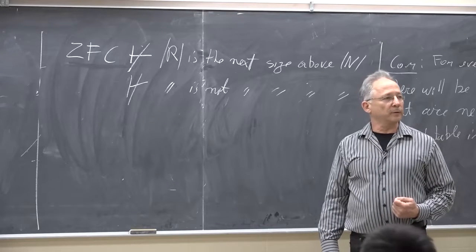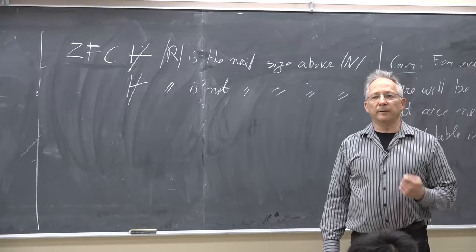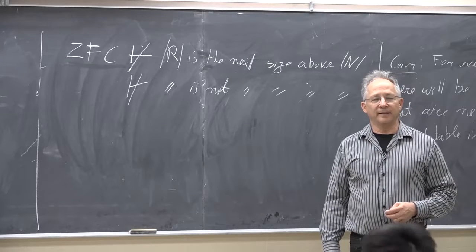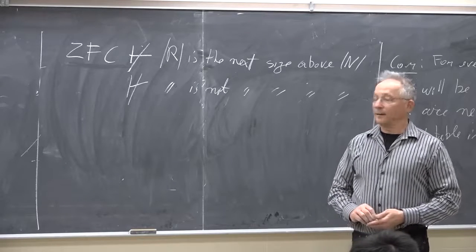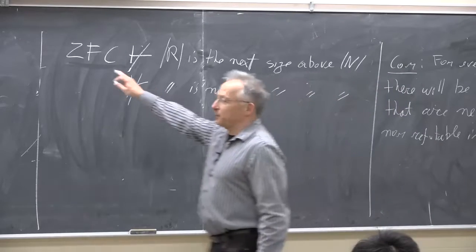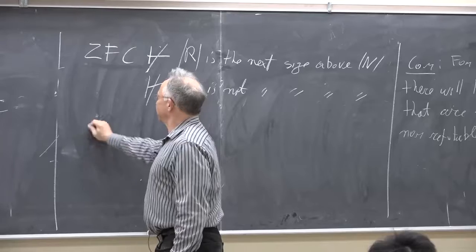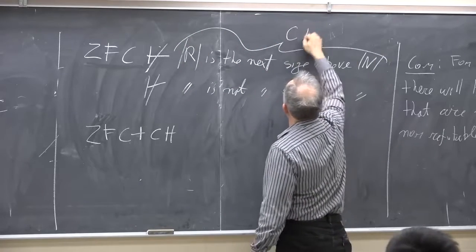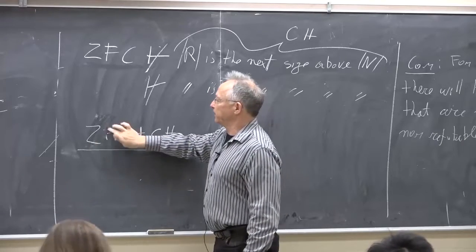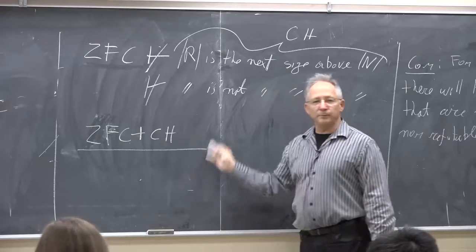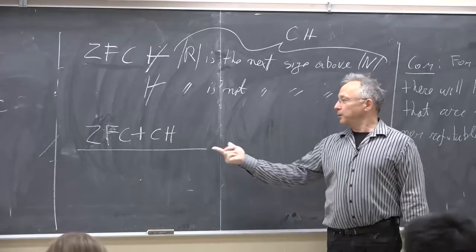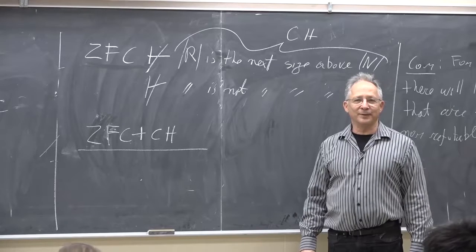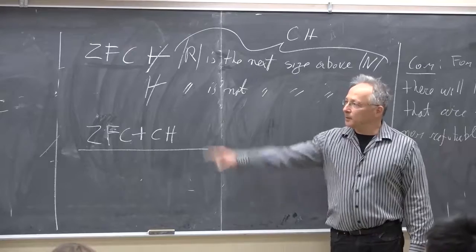Paul Cohen's statement about the continuum hypothesis is phrased more precisely in ZFC: ZFC cannot prove that the reals R are the next size above the naturals N, and it cannot prove that R is not the next size above N — it can neither prove it nor refute it. This is called the continuum hypothesis, and talks about our tools of mathematics. There are many more mathematical statements like this. Modern mathematicians facing such a problem know they can add the continuum hypothesis to ZFC as an additional axiom, but by Gödel's theorem, even that enriched system will have unprovable statements.